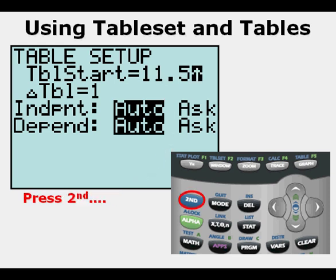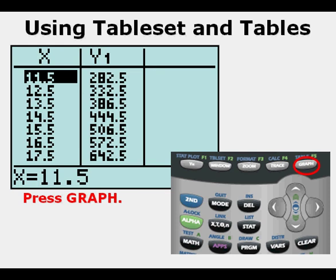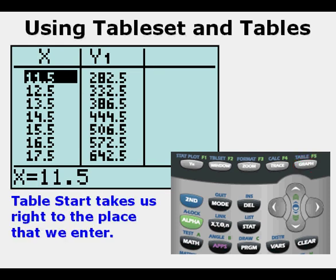Now press Second, then press Graph, and Table Start takes us right to the place that we entered: 11.5. Note that the input values are all increasing in one-unit increments, all ending in 0.5.